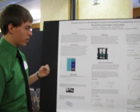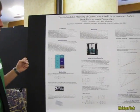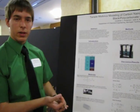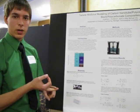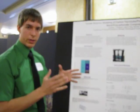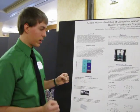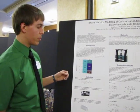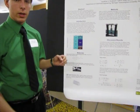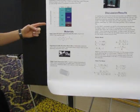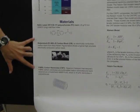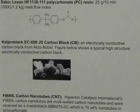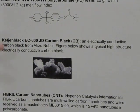The gist of my project was that we would take carbon nanotubes and carbon black in varying volume fractions and insert them into polycarbonate. So these were the three things we used: the polycarbonate, the carbon black, and the carbon nanotubes.